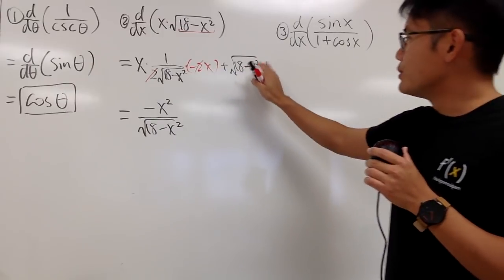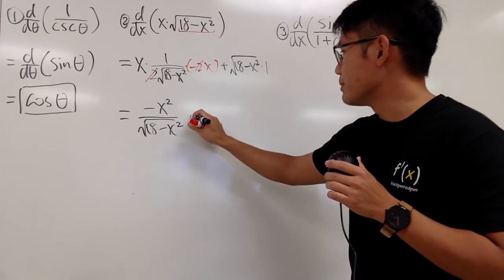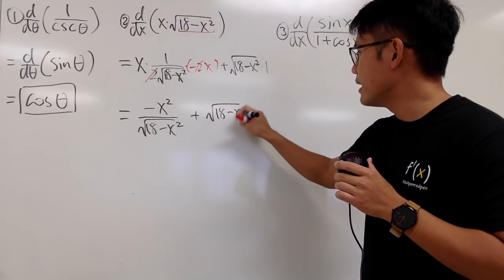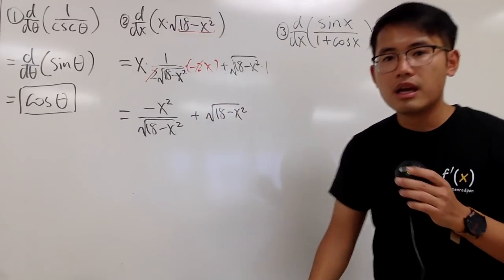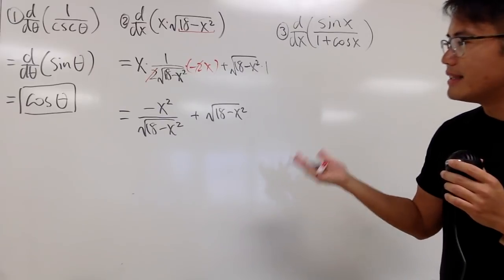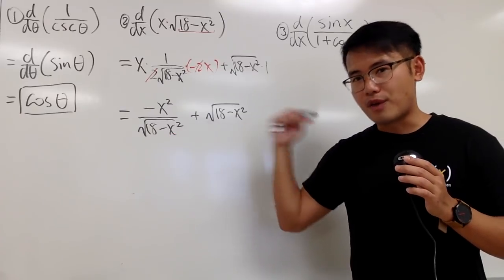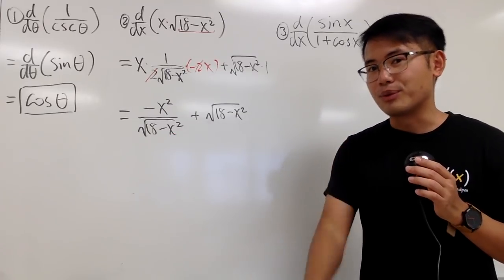And then, we are going to just add this times 1, which is just plus square root of 18 minus x squared, like this. And, you will notice, in fact, I didn't have this as one of the answer choices, because, in fact, we can combine the fractions by doing the following.